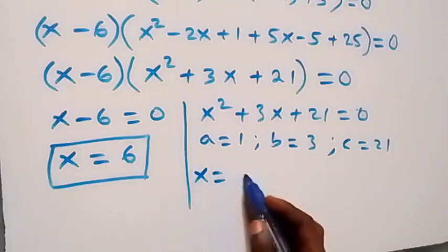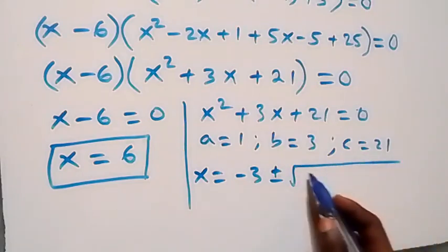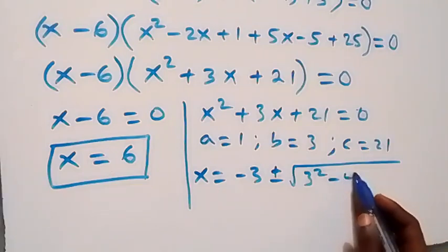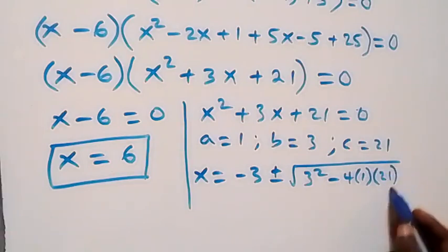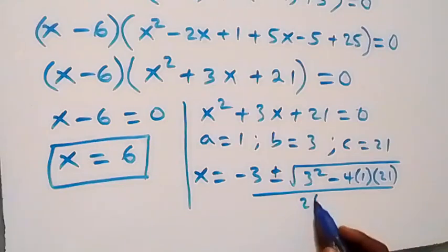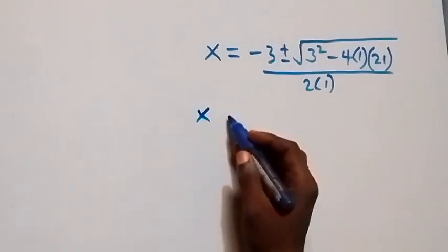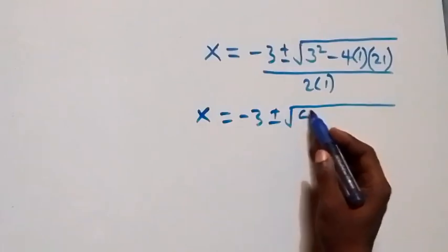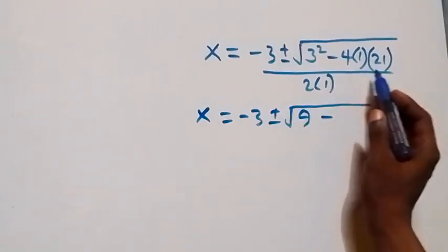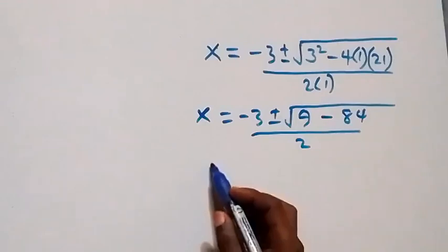Using the quadratic formula: x equals minus 3 plus or minus square root of 3 squared minus 4 times 1 times 21, over 2 times 1. Solving: x equals minus 3 plus or minus square root of 9 minus 84, over 2.